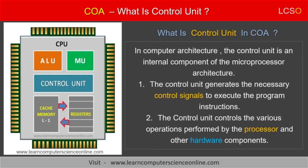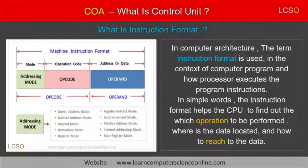The control unit generates the necessary control signals to execute the program instructions and to control the various operations performed by the processor. The control unit performs two important functions.